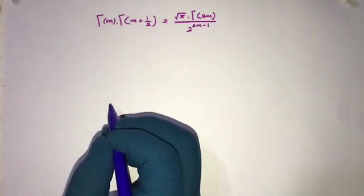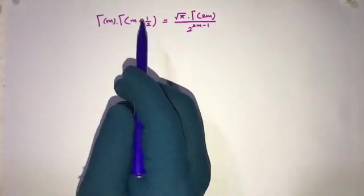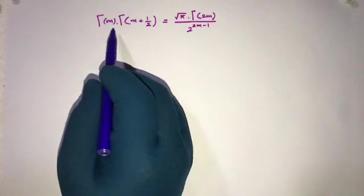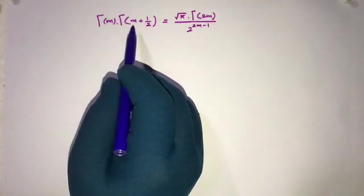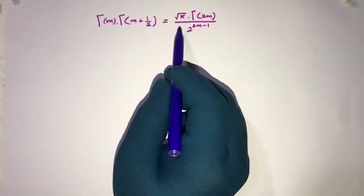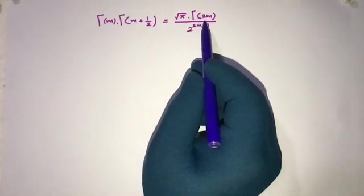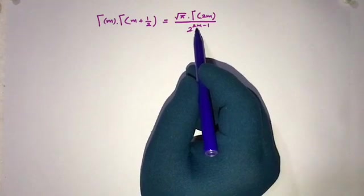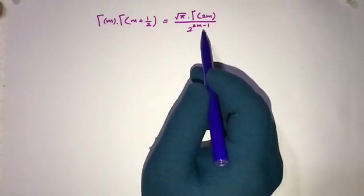Welcome to the mathematics channel. Today we are going to go through the duplication formula. The formula is: gamma of m times gamma of m plus one-half is equal to the square root of pi times gamma of 2m, over 2 to the power 2m minus 1.